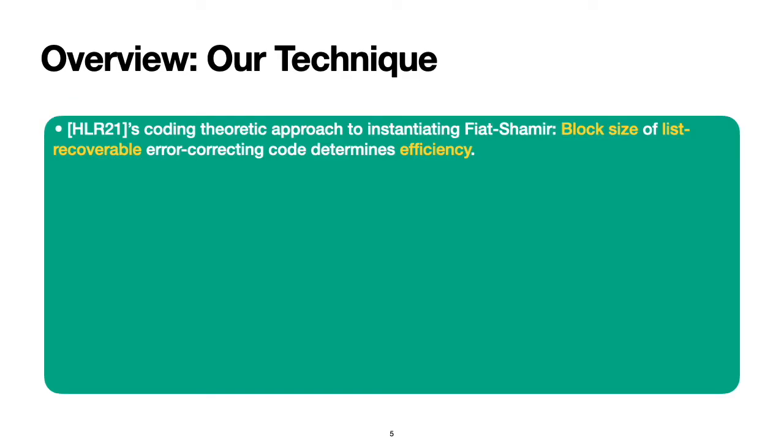As an overview, our technique builds off of HLR21's coding-theoretic approach to instantiating Fiat-Shamir. They show how to use a list-recoverable error-correcting code to address the case of exponentially many bad challenges. There, the block size of this list-recoverable error-correcting code determines the efficiency of the proof.